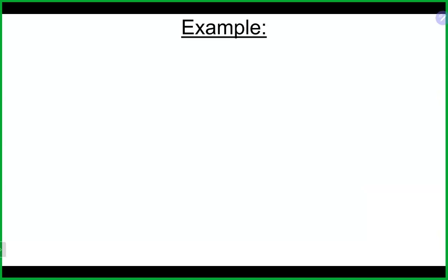Let's try one. Determine the amount of energy as heat required to raise the temperature of 10 grams of metal with specific heat capacity 0.89 joules per gram per degree Celsius from 25 to 58 degrees Celsius. Answer in joules and calories. Take a couple moments and calculate it.